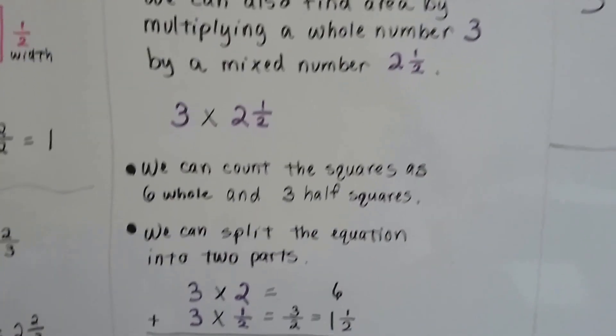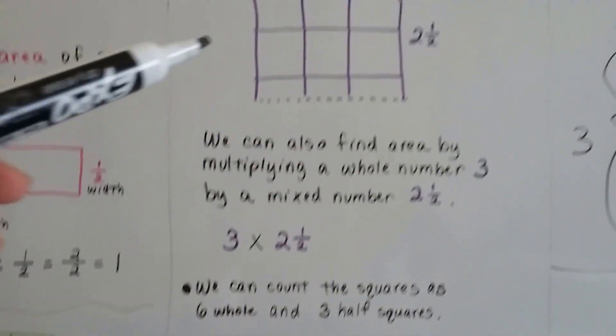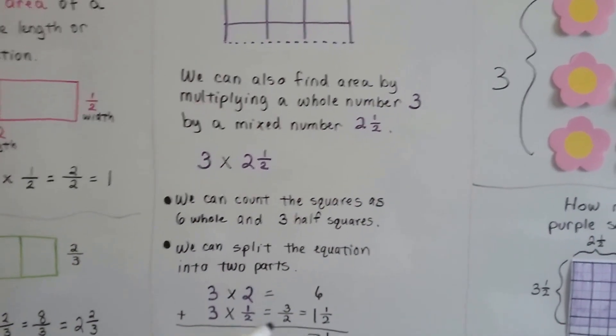We can split the equation into two parts. We can do 3 times 2, which is the 6. We can see them right here. Then we can do 3 times a half.